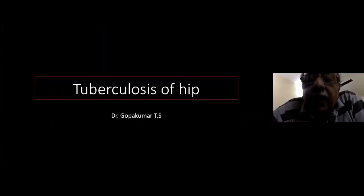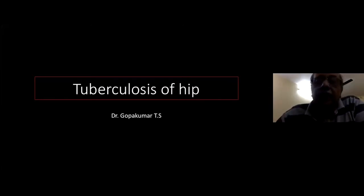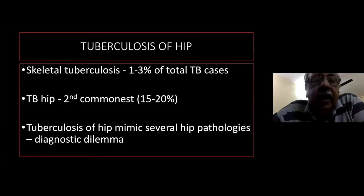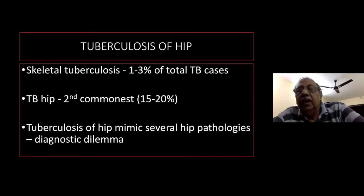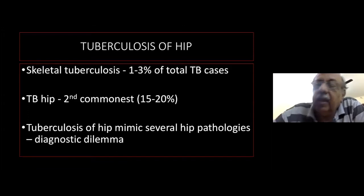First of all, I would like to thank the Indian Orthopedic Association for organizing such a fantastic program for our budding orthopedic surgeons. The topic given to me is tuberculosis of the hip. Skeletal tuberculosis comprises one to three percent of total tuberculosis cases, and the hip is the second commonest site, constituting about 15 to 20 percent of osteoarticular tuberculosis. It is often featured in exams because it is a diagnostic dilemma, as tuberculosis of the hip mimics several hip pathologies.